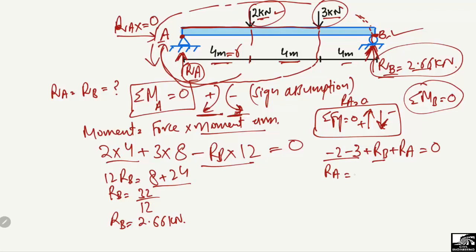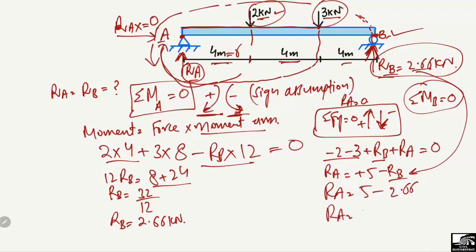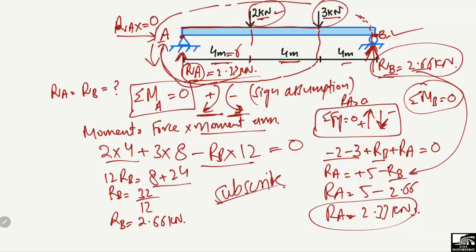Rearranging: RA = 5 − RB = 5 − 2.66 = 2.33 kN. So RA equals 2.33 kN. That is how you find the support reactions for a simply supported beam. Hope you guys understand — don't forget to subscribe to the channel. Thank you for watching.